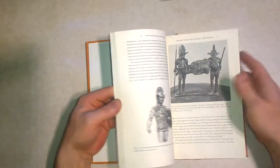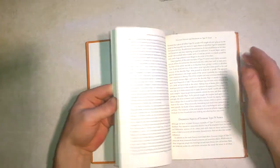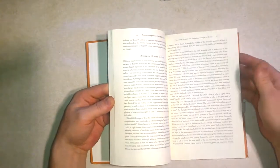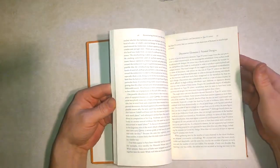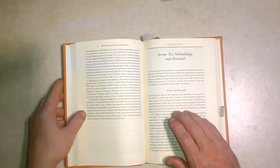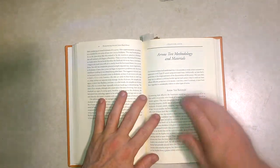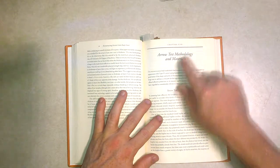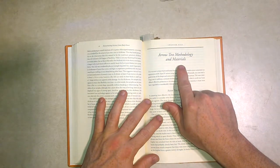Now while this book is primarily about figuring out what linothorax was made of, how prolific its use was, things like that, there's an entire section on testing they did and one of those chapters is chapter 5, arrow test methodology and materials.